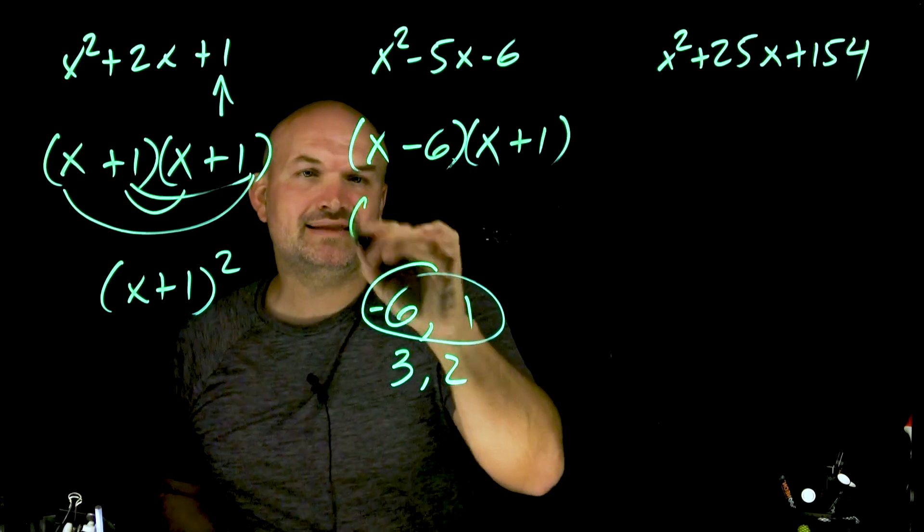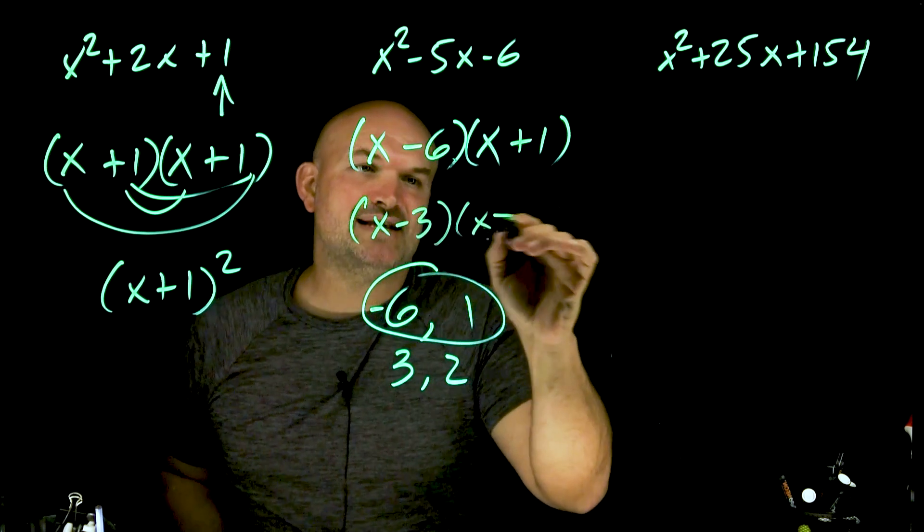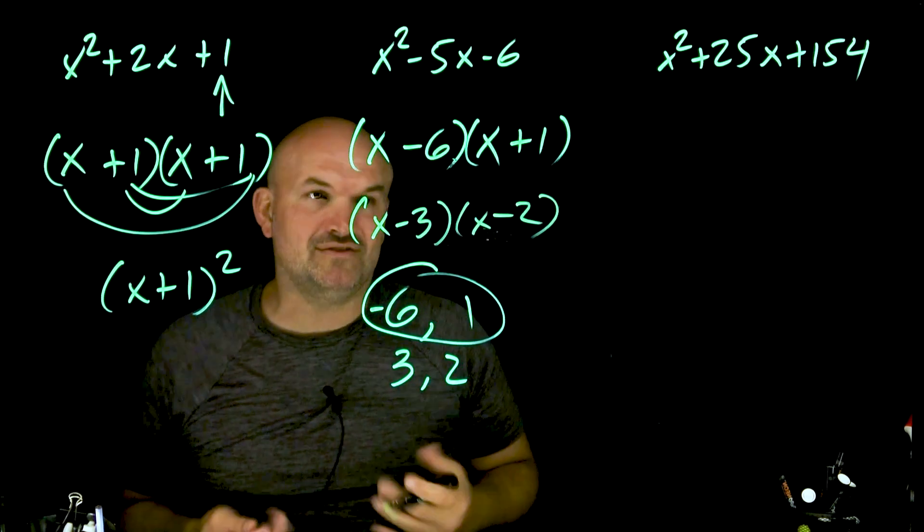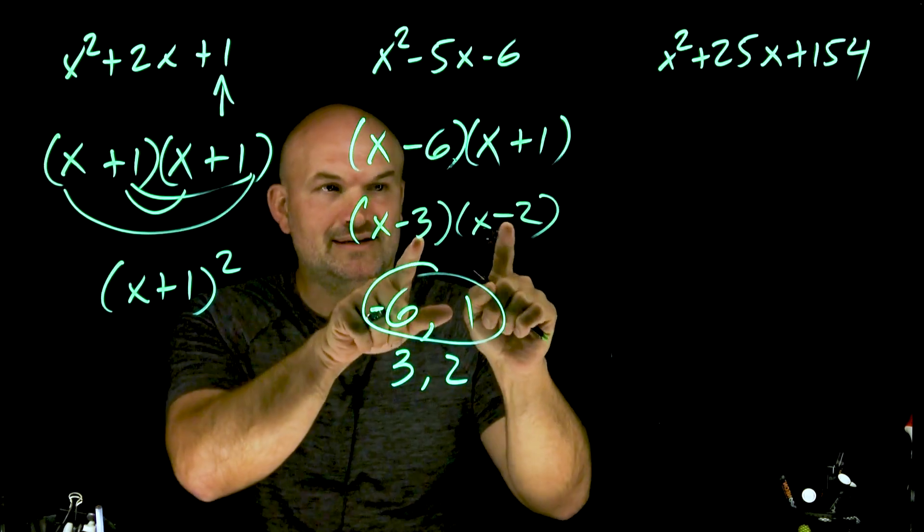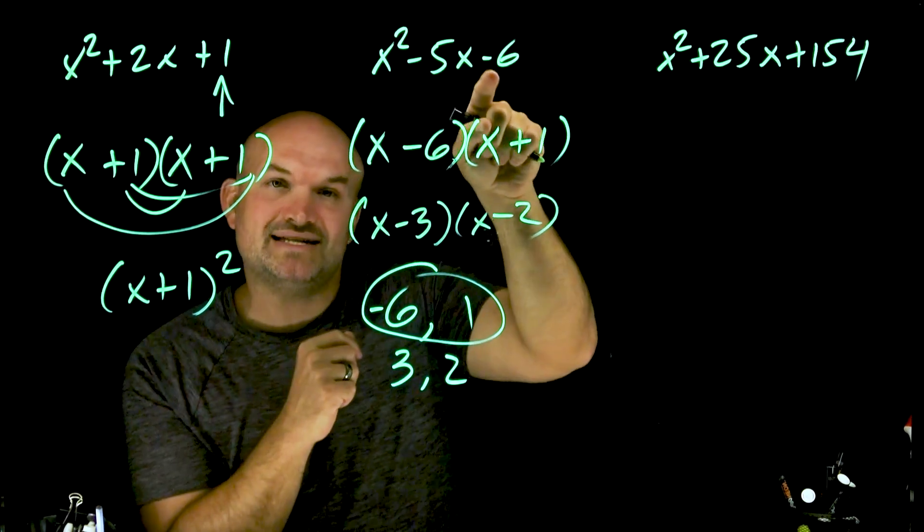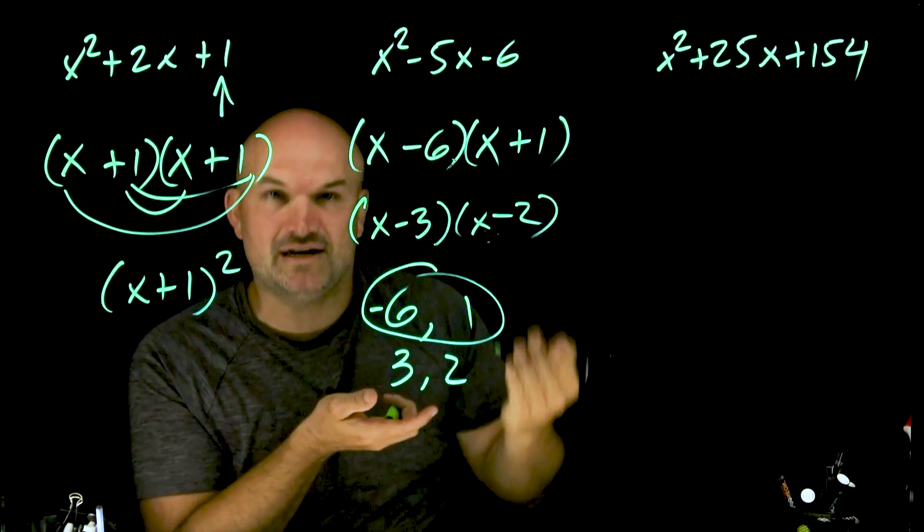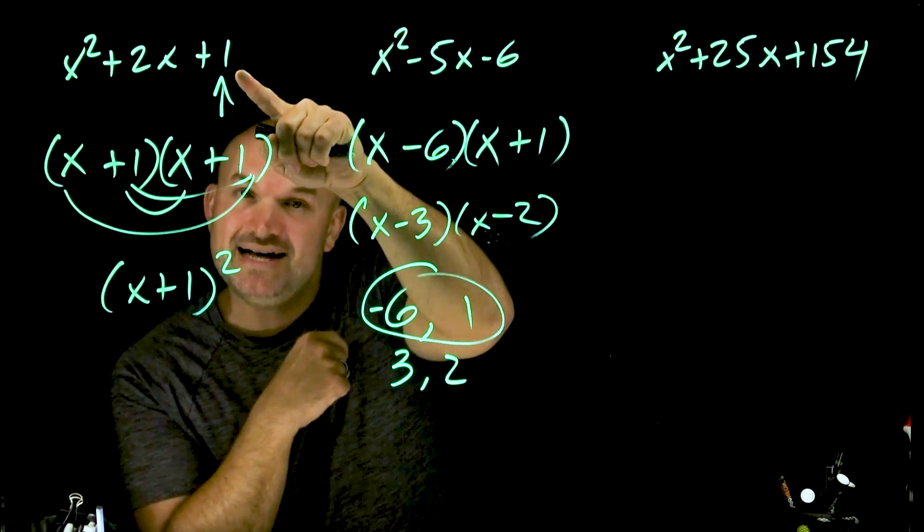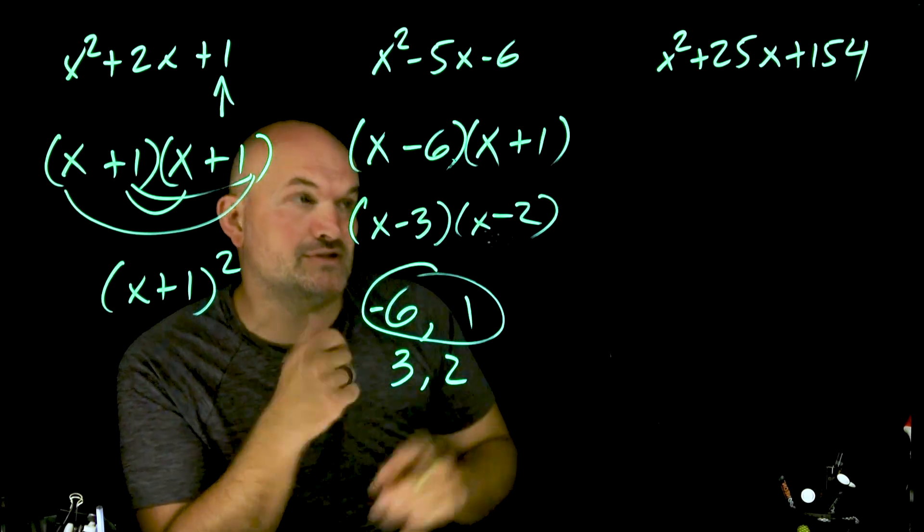However, what's the thing that most students do all the time? They remember this product and sum, and students all the time will think it's (x - 3)(x - 2). I've done it myself. But here's the kicker, ladies and gentlemen: negative 3 times negative 2 is a positive 6. So when your last number is negative, think difference of the factors. When your last number is positive, think sum of your factors.